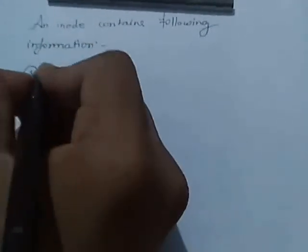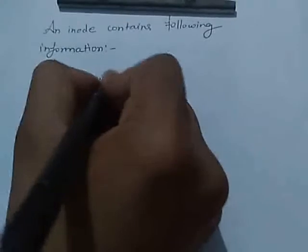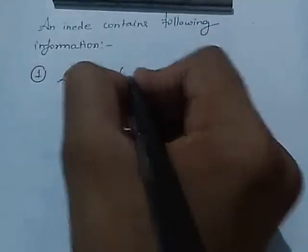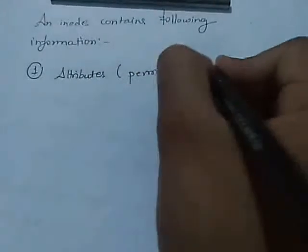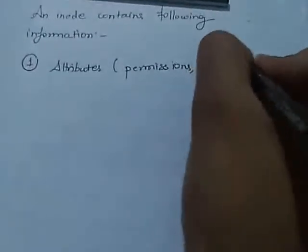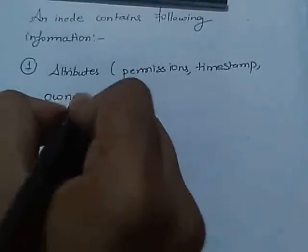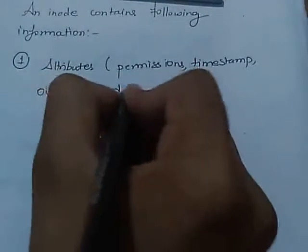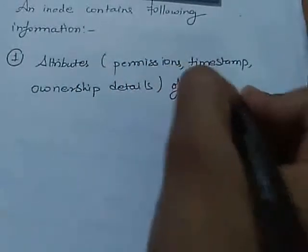An inode contains the following information. First, it contains attributes. Inside attributes we have permissions, we have timestamps, and we have ownership details of a file.